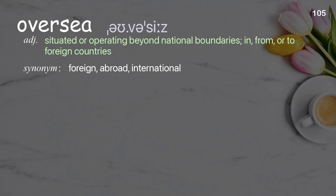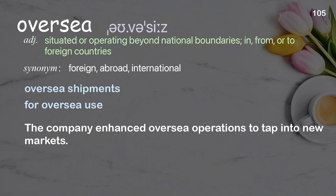Oversee. Situated or operating beyond national boundaries, in, from, or to foreign countries. Examples: oversee shipments, for overseas use. The company enhanced overseas operations to tap into new markets.